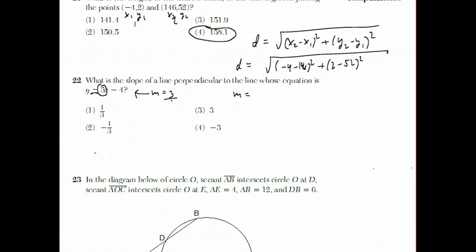So the line perpendicular will have negative reciprocal. 3 is really like 3 over 1. So we flip it, and we negate it. That's why the answer to this question is choice 2.